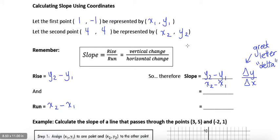So what is our y2 minus our y1? Our y2 is our 4, our y1 is our negative 1. So we're subtracting negative 1. Don't forget to include both of those signs.